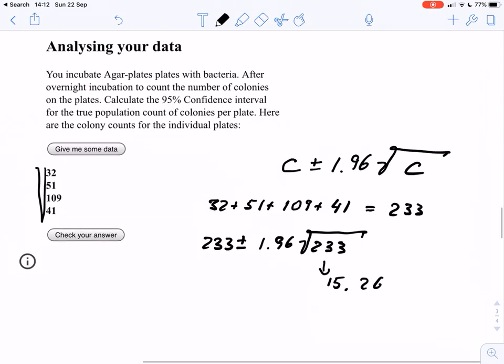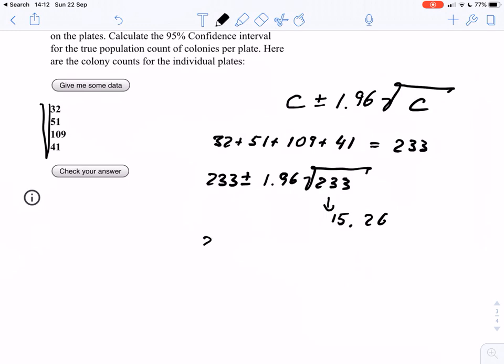So we have 233 plus minus 1.96 times 15.29, that gives us 29.9, that is roughly 30 colonies. So our range here would be from 203, that's minus the 30, to 263.